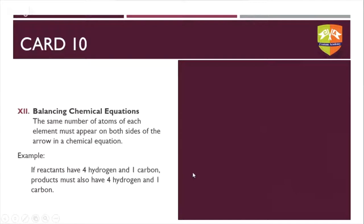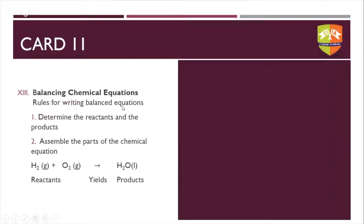For example, if we have four hydrogen atoms and one carbon atom in one reactant, we will need four hydrogens and one carbon on the other side as well. It is important to have the same number of atoms on both sides. If we have a systematic method for balancing a chemical reaction, it would be ideal to apply it to any chemical reaction.